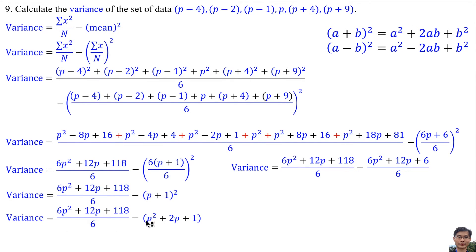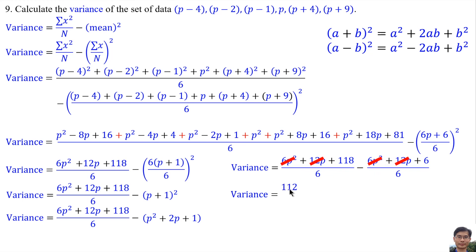1 times 6 is 6, 2 times 6 is 12, 1 times 6 is 6. Then: 6P squared minus 6P squared equals 0; 12P minus 12P equals 0; 118 minus 6 is 112. So the answer is 56 over 3.